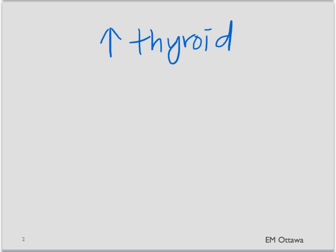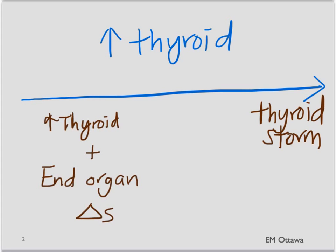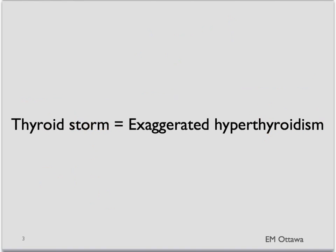What is thyroid storm? Thyroid storm is a form of hyperthyroidism where there is too much thyroid hormone. It sits at the extreme end of hyperthyroidism. It is defined as hyperthyroidism with end organ dysfunction, particularly with cardiac and neurological effects. Patients with thyroid storm, therefore, have exaggerated clinical features of hyperthyroidism.